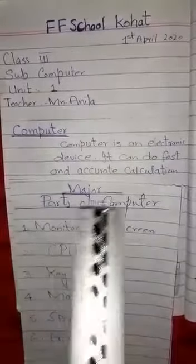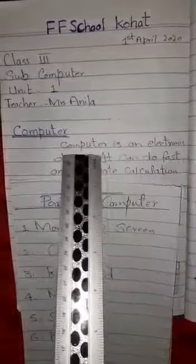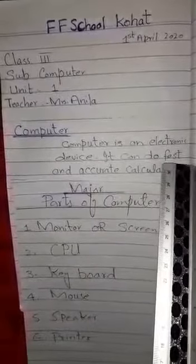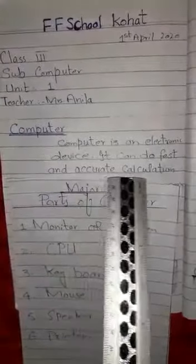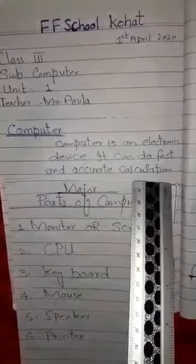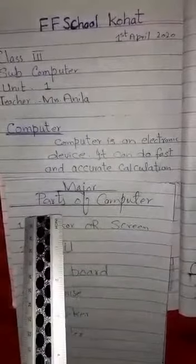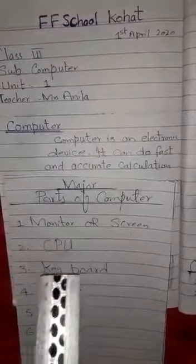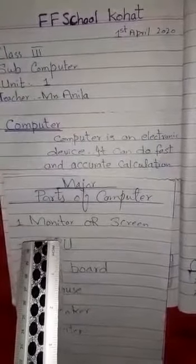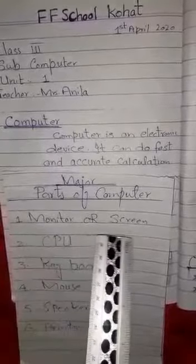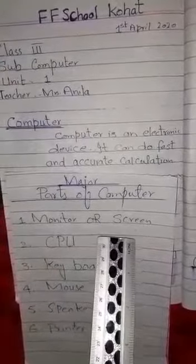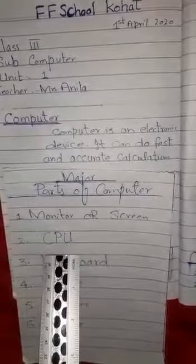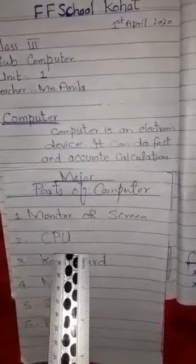A computer is an electronic device that can do fast and accurate calculations. The major parts of the computer, which you are familiar with, are: first, the monitor or screen; second, the CPU — the central processing unit.